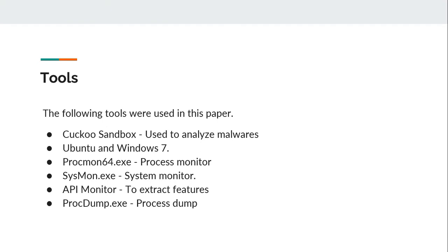The following tools were used in this paper: Cuckoo Sandbox, used to analyze malware; Ubuntu and Windows 7 as operating environments; Procmon64.exe, a process monitor used for process monitoring; Sysmon.exe, a system monitor used during ransomware execution; an API monitor to extract features from the report generated by Cuckoo Sandbox; and Process Dump, used for process dumping.